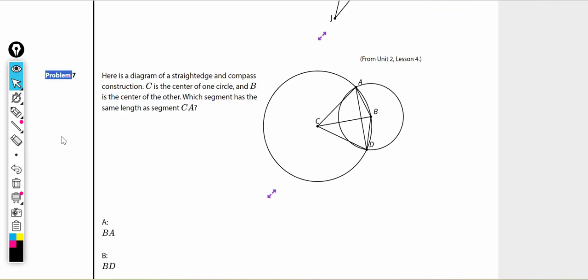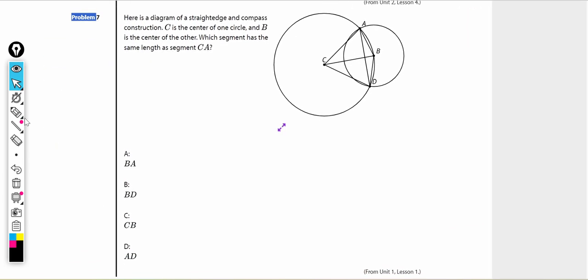Problem number 7. Here's a diagram of a straight edge and compass construction. C is the center of one circle, and B is the center of the other. Which segment has the same length as segment CA? If you remember, all radiuses in a circle are the same length. So if CA is a radius of circle A and CD is a radius of circle D, then they have to be congruent. So CA, CD. That's not on our answer list, so we did find congruent segments, but we're not done yet.